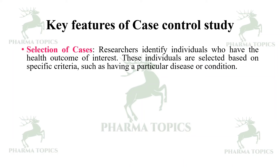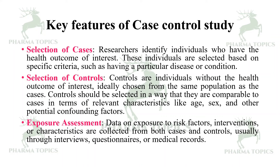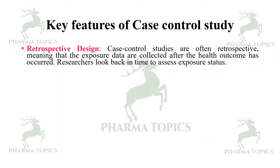Key features of case control studies: selection of cases — researchers identify individuals who have the health outcome of interest based on specific criteria such as having a particular disease or condition. Selection of controls: controls are individuals without the health outcome of interest, ideally chosen from the same population as the cases and comparable in terms of relevant characteristics like age, gender, and other potential confounding factors. Exposure assessment: data on exposure to risk factors, interventions, or characteristics are collected from both cases and controls, usually through interviews, questionnaires, or medical records.